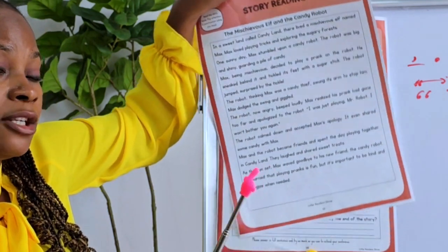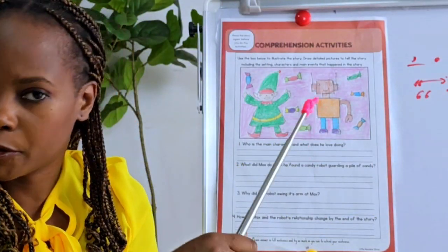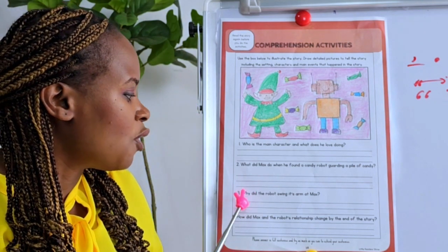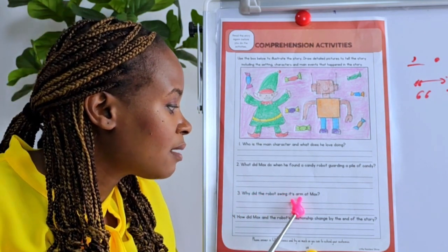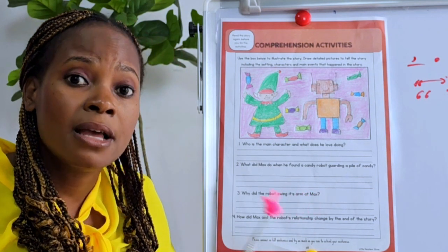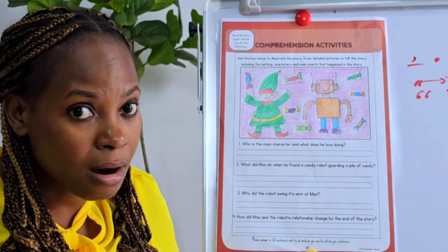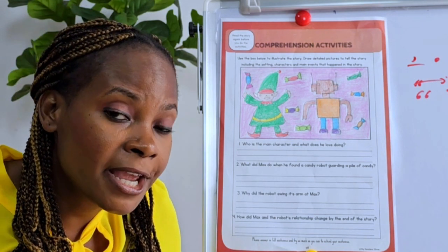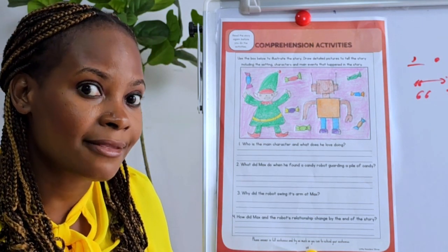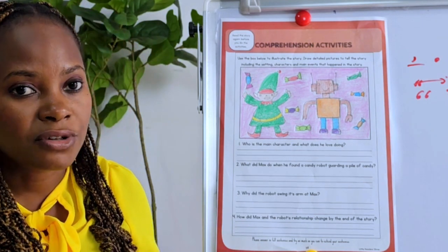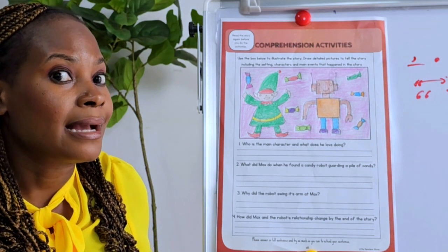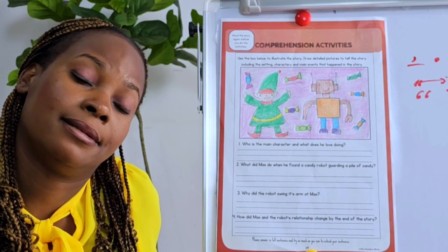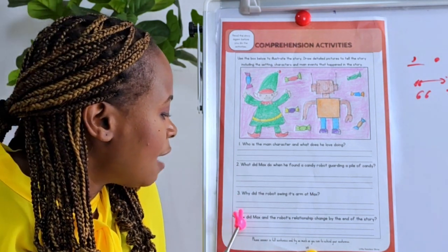...to stop him from stealing the candy, because it thought Max was a candy thief. If I was a robot, I would think the same, to be honest. How did Max and the robot's relationship change by the end of the story? Let's go towards the end and see.